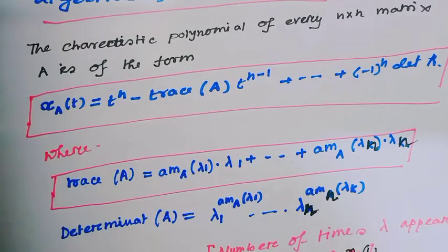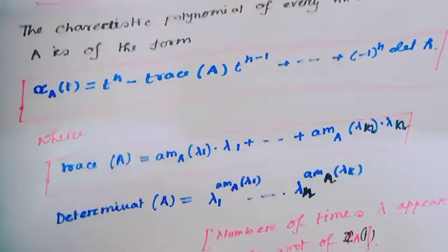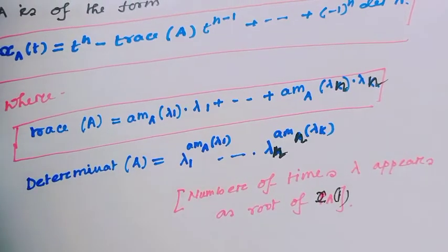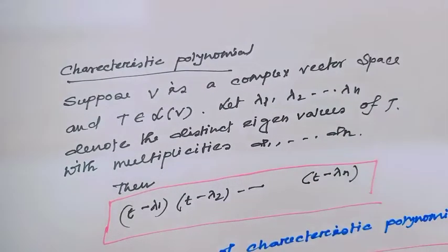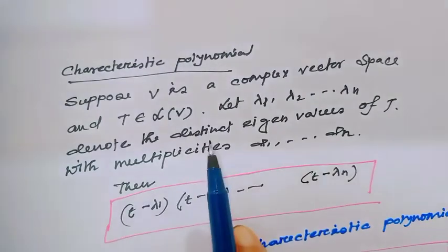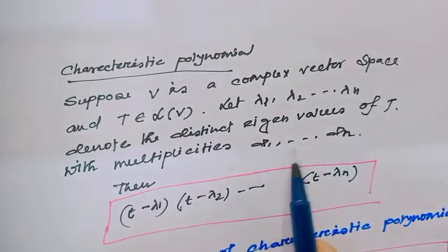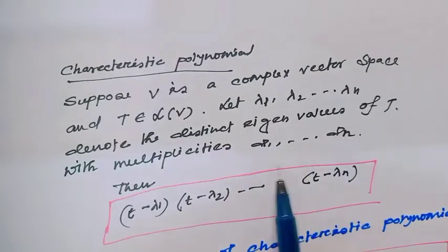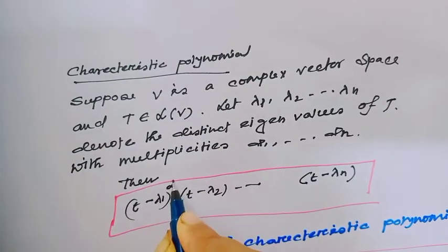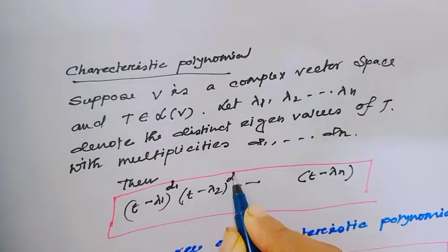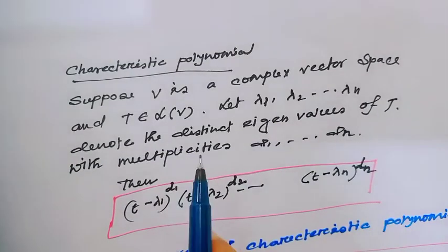Today I will first see why the sum of the eigenvalues equals the trace, and the product of the eigenvalues equals the determinant of the matrix. Another definition of characteristic polynomial: suppose V is a complex vector space and T is a linear operator on it, with distinct eigenvalues λ₁, λ₂, …, λₙ with multiplicities d₁, d₂, …, dₙ. Then (T − λ₁)^d₁ · (T − λ₂)^d₂ ⋯ (T − λₙ)^dₙ is the characteristic polynomial.